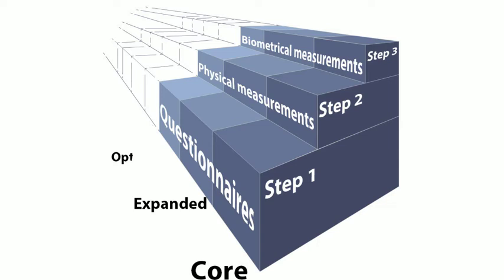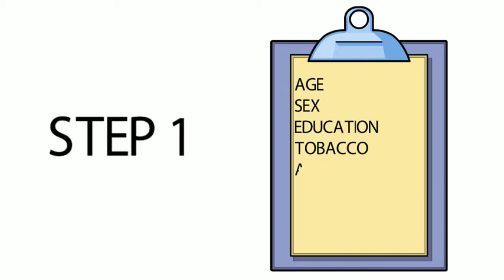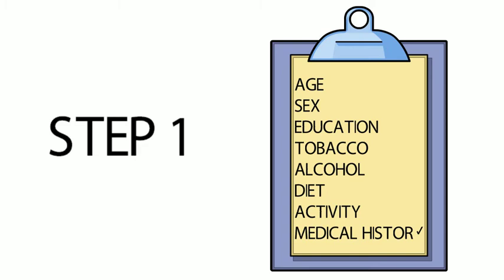Step one of STEPS involves gathering demographic and behavioural information by implementing a questionnaire to people in their household setting. At this level of STEPS, data collected includes core socio-demographic information such as age, sex, education levels, tobacco and alcohol use, dietary behaviour and physical activity, and history of pre-existing chronic diseases and any medications being taken.